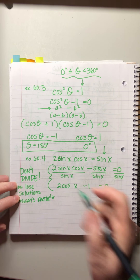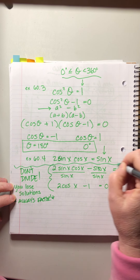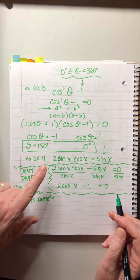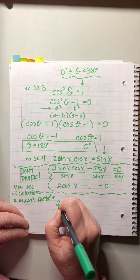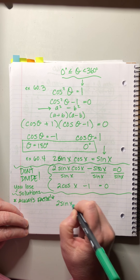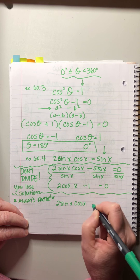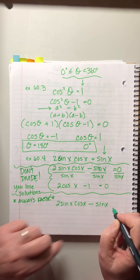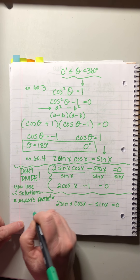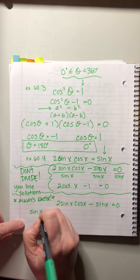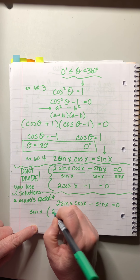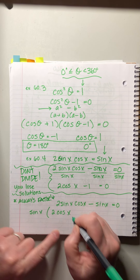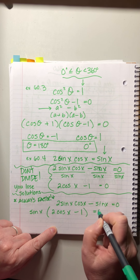Instead, always factor. Going back to 2sin x·cos x - sin x = 0, we factor out sin x to get sin x(2cos x - 1) = 0. That's the correct approach.